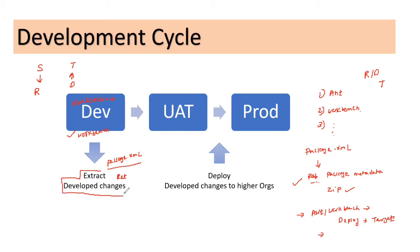My end goal is to get this developed form of metadata, which is in the XML format. So why I need this in XML format, so that I can deploy these changes to the upcoming orgs or the orgs that I wanted this deployment to happen.